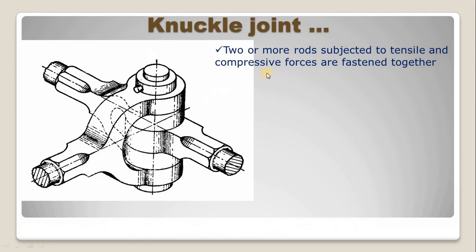Remember that in this joint the compressive load is not externally acting, but compressive force is developing in the cross-sectional area of the parts of the knuckle joint, because whenever we apply tensile load, automatically compressive load will also act on the members and parts of the knuckle joint.